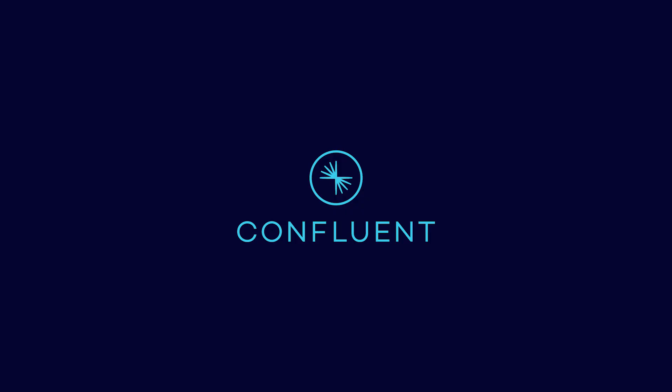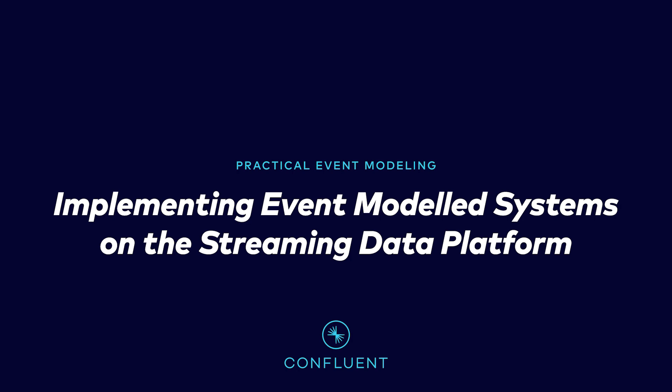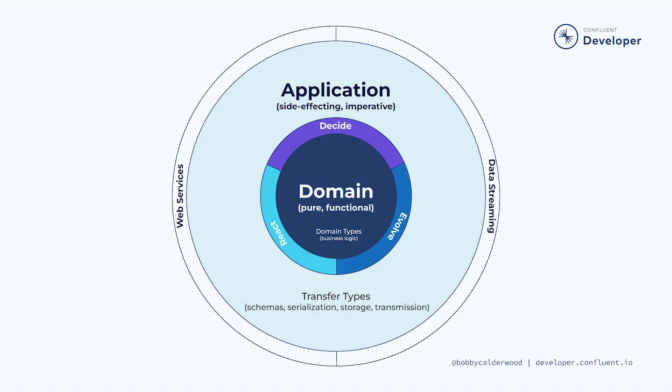In the last module, we built the core business domain logic derived from our event model. Now we're ready to build our application by plugging that domain logic into the streaming data platform's infrastructure and APIs. The transfer types, along with the decide, evolve, and react functions that we outlined in the previous module, comprise the contract with the core domain of our system. Now we can use the Confluent streaming data platform to implement the application and infrastructure layers of our system.